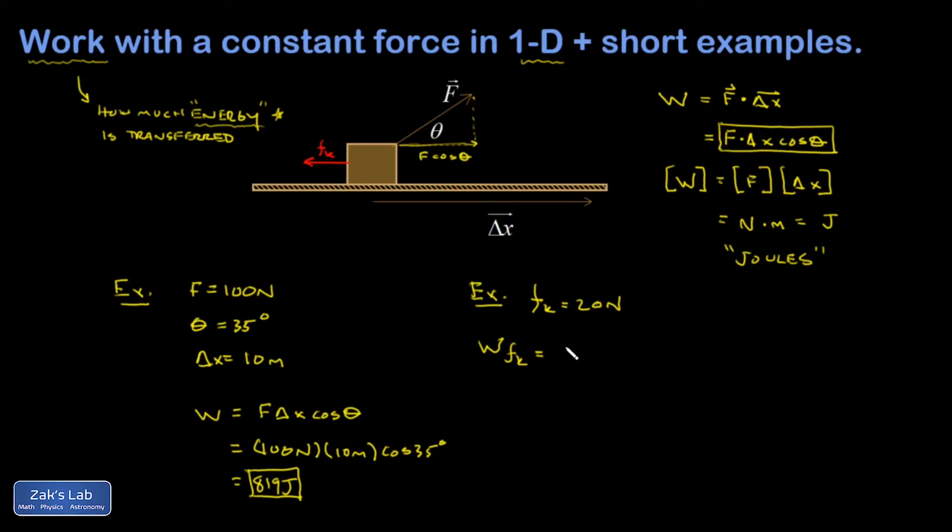I would have to take the dot product between fk and the displacement vector. If I write it in this form, I have fk times delta x times the cosine of the angle between fk and delta x. Well, these two vectors point in opposite directions, so the cosine of that angle is negative 1, the cosine of 180 degrees. So I end up with negative fk delta x.